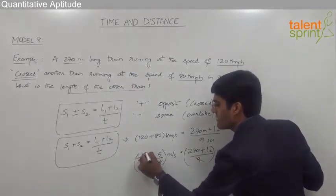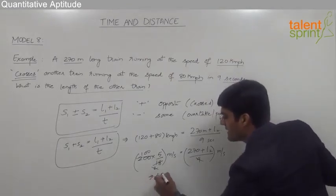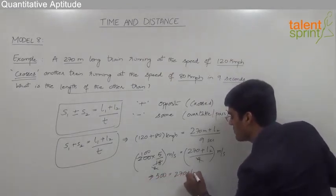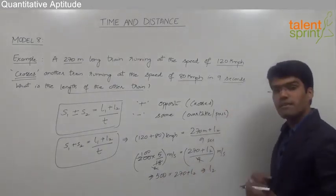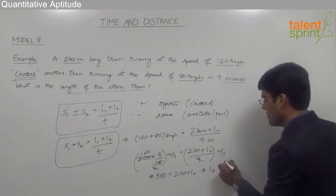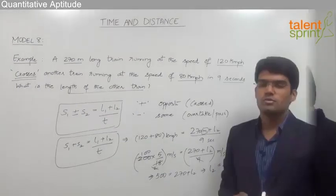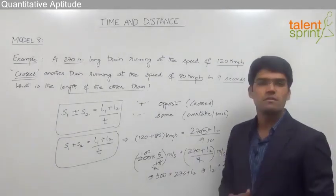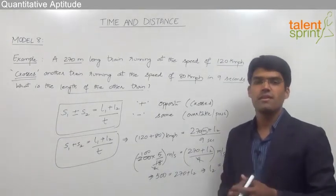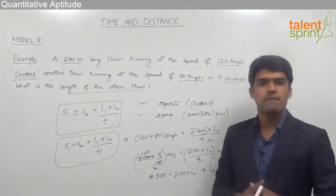Simplifying: 9 cancels, 2 goes 100 times, and 100 into 5 gives 500. So 500 equals 270 plus L2, which means L2 equals 500 minus 270, that is 230 meters. So the length of the second train is 230 meters. To solve these type of questions, we simply decide which equation to use, substitute the values at the right places, balance the units, and find the required answer.